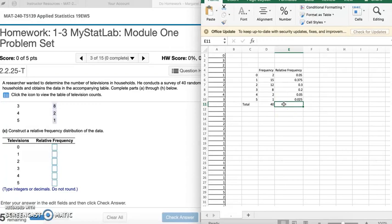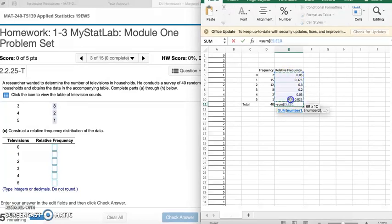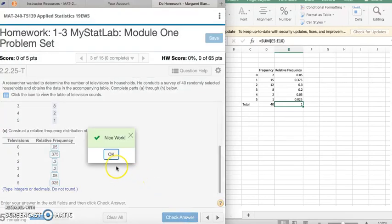Another thing I want to point out, if you ever want to check your answer, the total or the sum of your relative frequencies has to equal 1. So we're going to check that real quick. There we go, 1. So let's go ahead and put our answers back in here. 0.05, 0.375, 0.3, 0.2, 0.05, and 0.025. Check answer. Nice work.